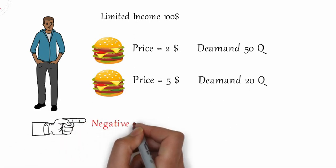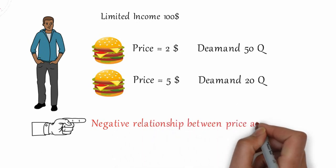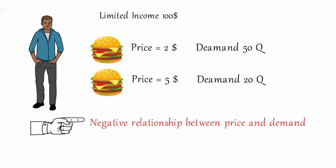Why did Alex reduce demand quantity? That is limited income. Then there will be a negative relationship between price and demand.